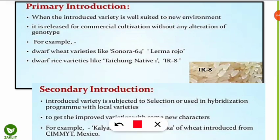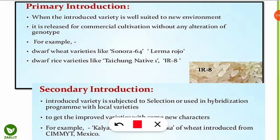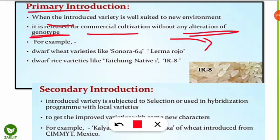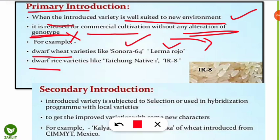Starting with primary introduction: this type is done when the introduced variety is well suited to a new environment. For example, a rice variety from Germany introduced into India — as per primary introduction, we simply release the plants for commercial cultivation without any alteration of genotype, because it is well suited to the new environment. Examples of primarily introduced varieties include dwarf wheat varieties like Sonora 64 and Lerma Rojo, and dwarf rice varieties like Taichung Native 1 and IR8.